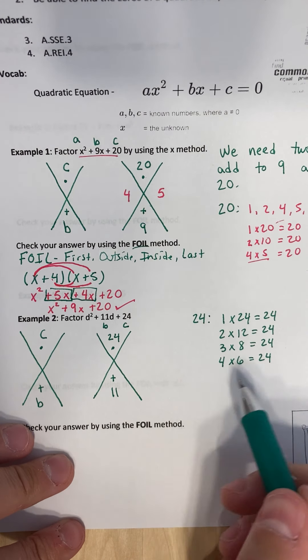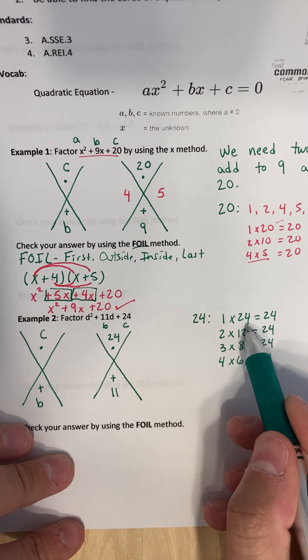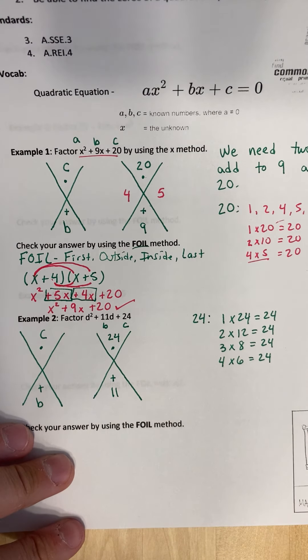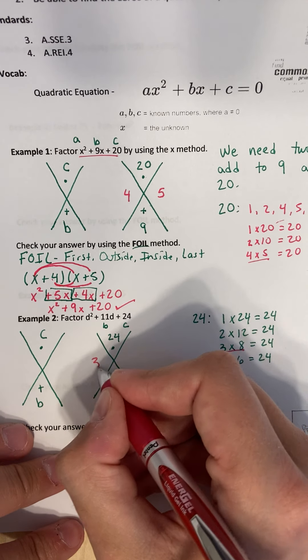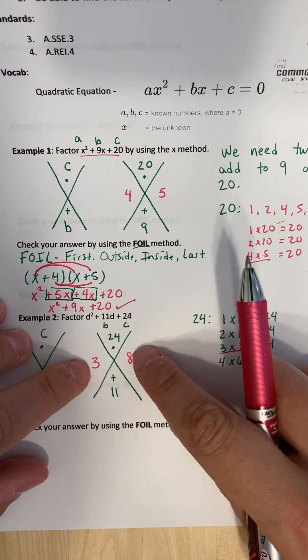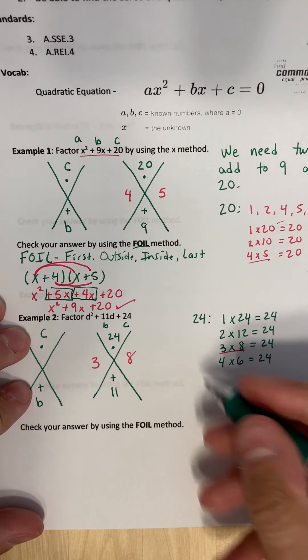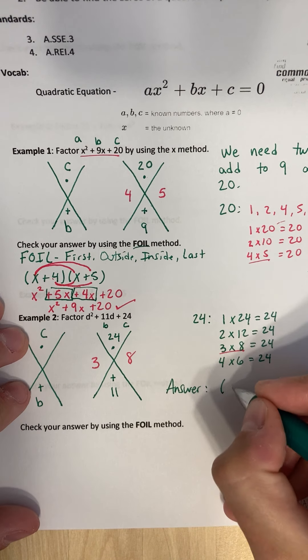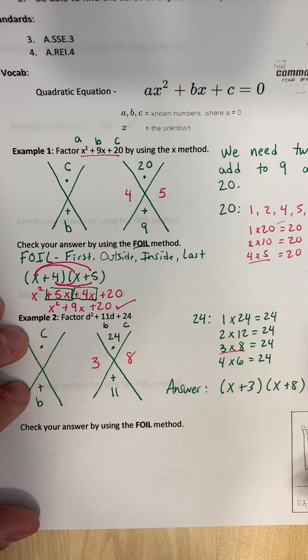So now you want to take a look and see, okay, which one of these might add up to 11? Does 1 and 24 add up to 11? No. 2 and 12? No. But 3 and 8 does. 3 and 8 does. So 3 and 8, they add together to get 11 and multiply together to get 24.